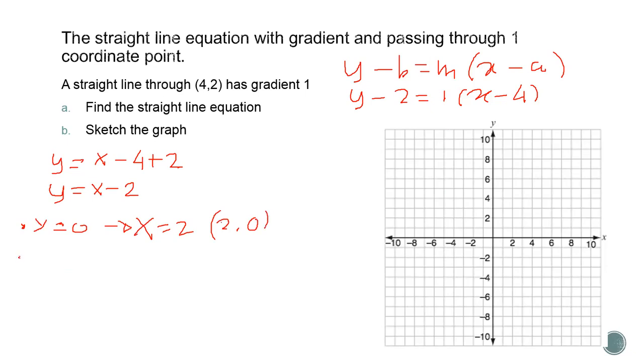And secondly, the second assumption is x equals 0. If x is 0, this x is 0, it means y equals negative 2. And the coordinate point is 0, negative 2.